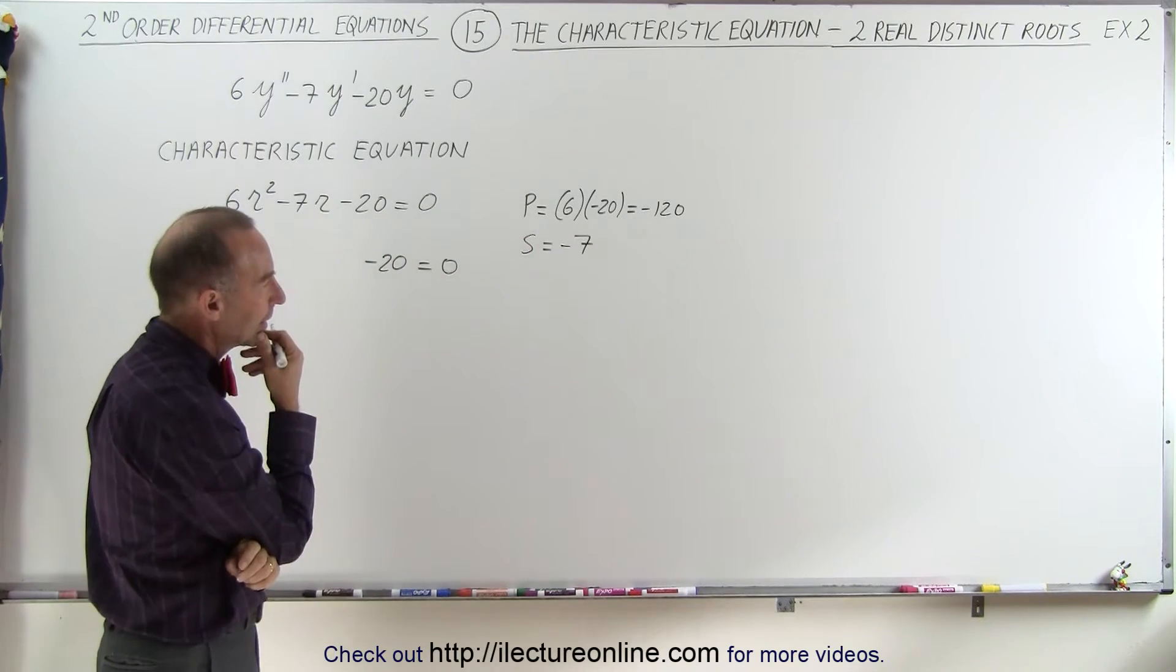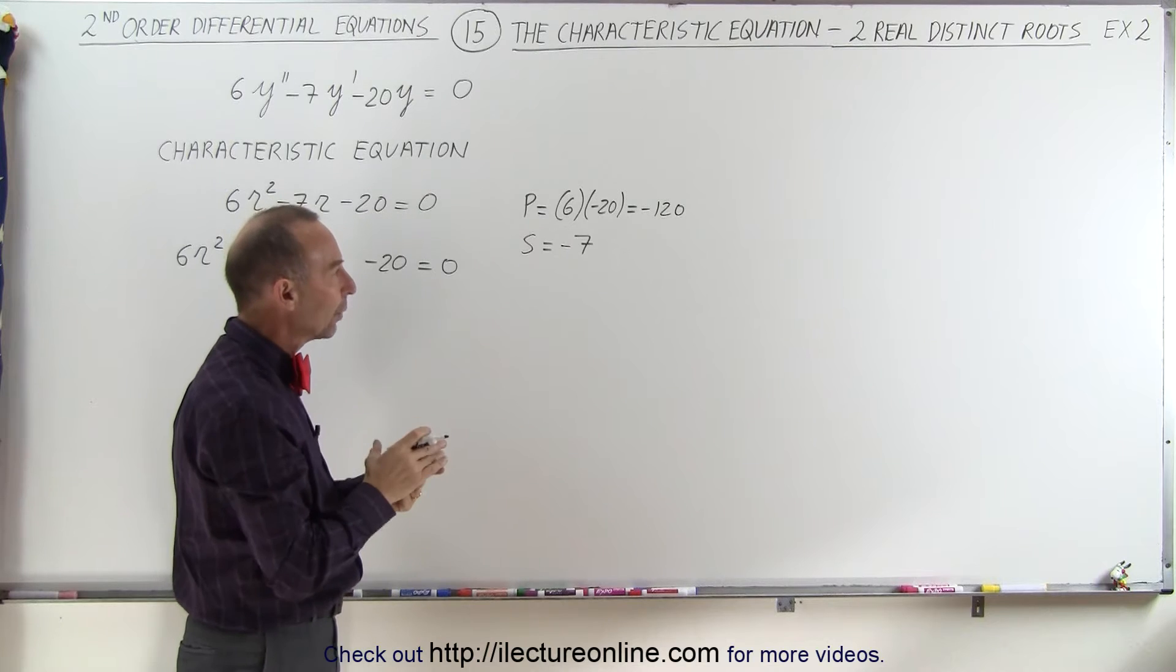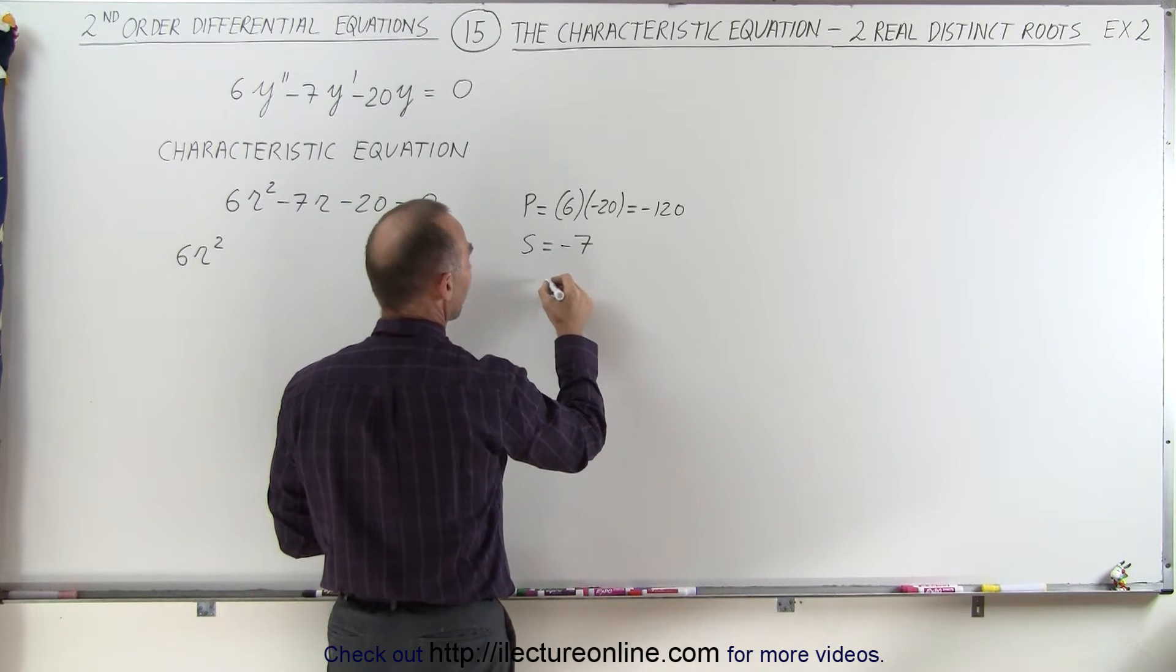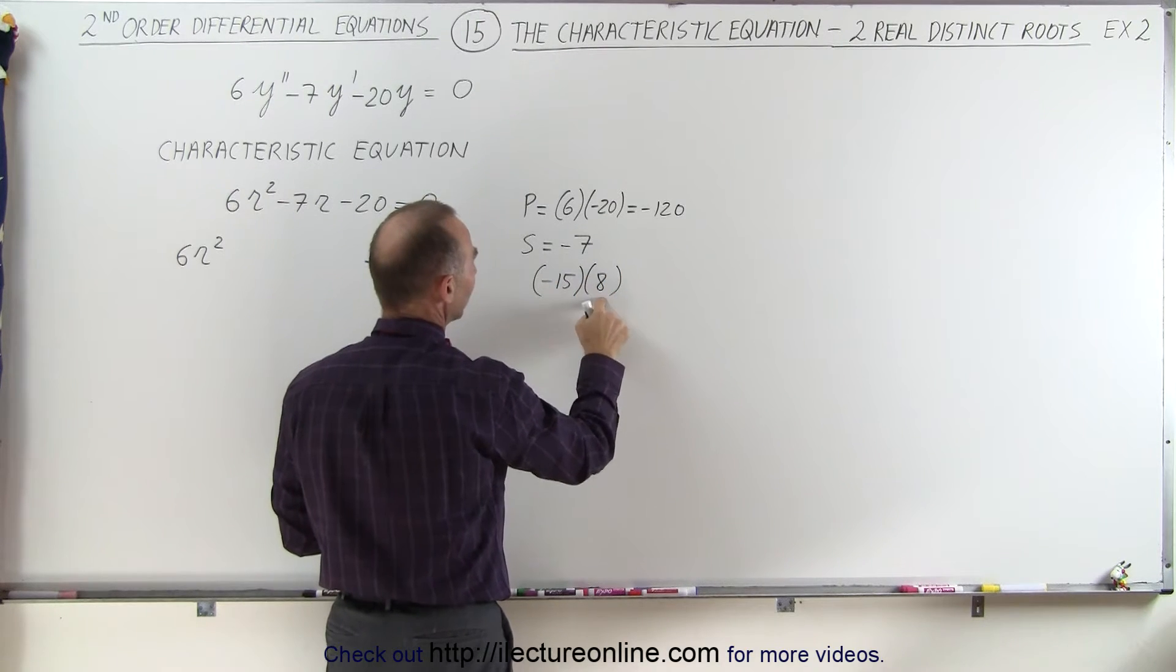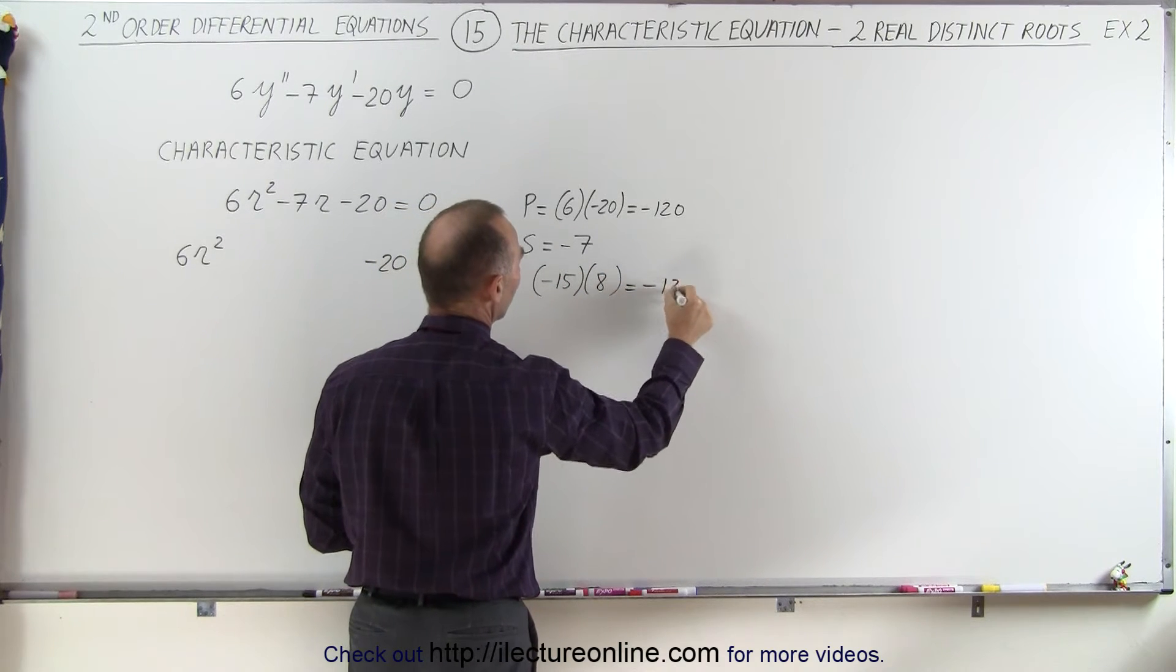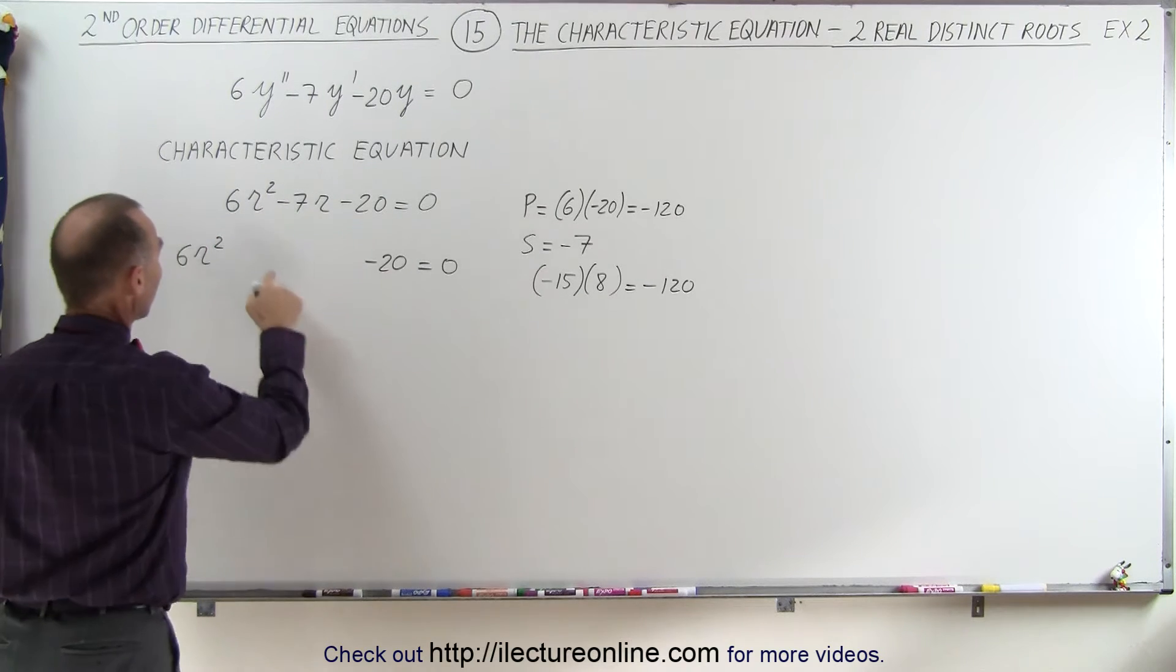The difference is 7, and when you multiply, you get 120. The two numbers are -15 and +8. When you add them together, you get -7. When you multiply them together, you get -120. So those are the correct two coefficients.